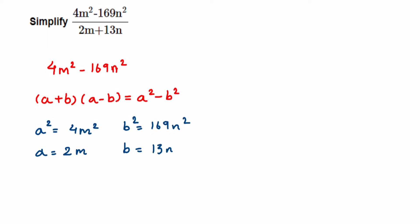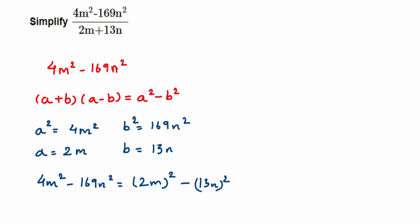So 4m² − 169n² can be written as (2m)² − (13n)², which is in the form a² − b². Using the identity a² − b² = (a + b)(a − b), this becomes (2m + 13n)(2m − 13n). We have now factorized the numerator.